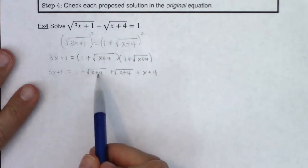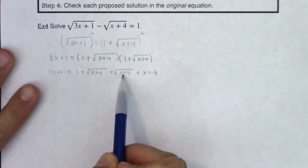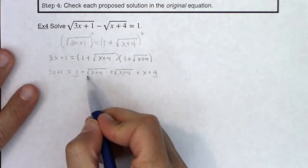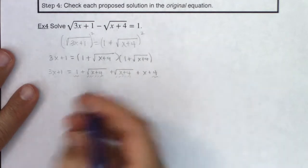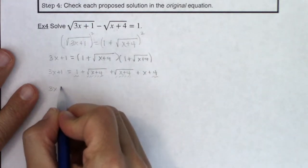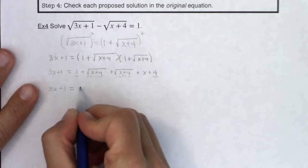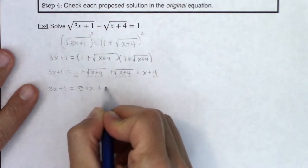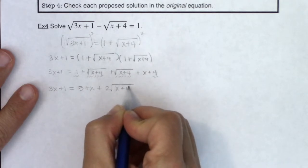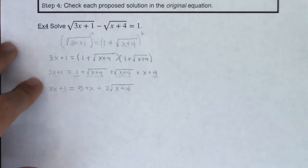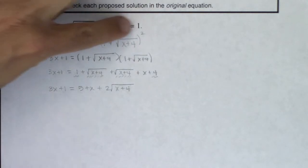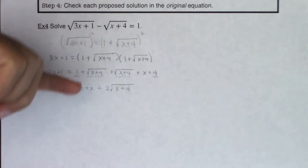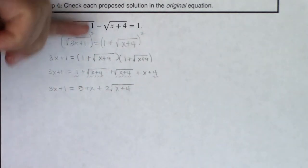I think you'll see that these are like terms, so let me go ahead and combine them. I'm also going to combine the 1 and the 4, and these two radicals are like terms. So I have 3x plus 1 equal to — 1 plus 4 is 5, I have an x, and I have 2 square roots of x plus 4. Yes, this looks ugly, but take note: I started with 2 radicals, and I only have 1 radical now. So I've simplified this a bit — even though it's still ugly, I got rid of a radical.